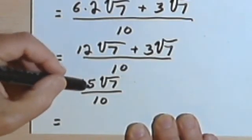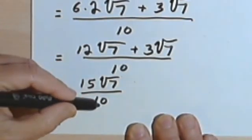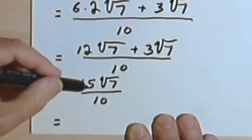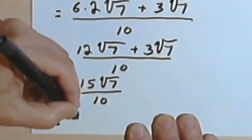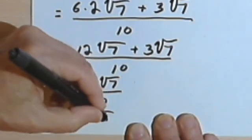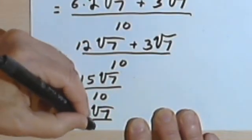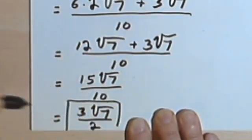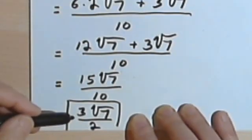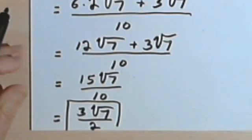Since I can divide both 15 and 10 by 5, I'll reduce the fraction and turn this into 3 times the square root of 7 over 2. And that's my simplified answer. That's about it for now — see you next time!